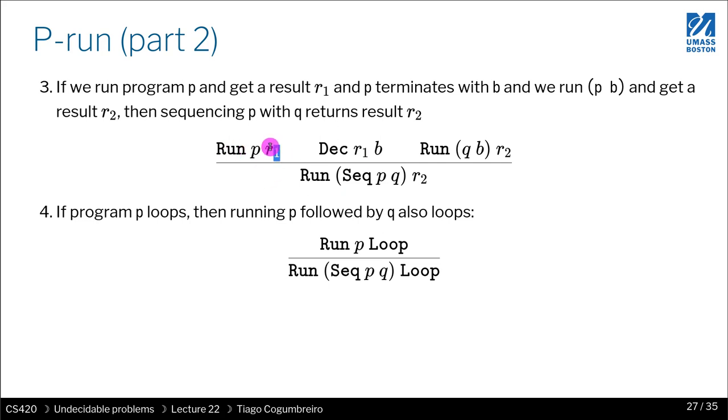Here we're running P, the result is R1. If R1 halts, which is what this dec is saying - decidable - then B is either true or false. I pass this boolean to Q. I can use Q to continue execution. The execution of the continuation is R2, so the whole thing returns R2.